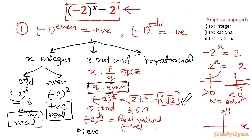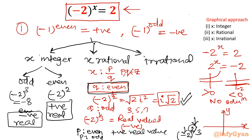Now I apply the condition on P. If P is even — for example x = 2/3 — the even power will convert our negative value into positive. So when P is even, we get a positive real value as a solution. And if P is odd, it is obviously a negative real value as our solution.